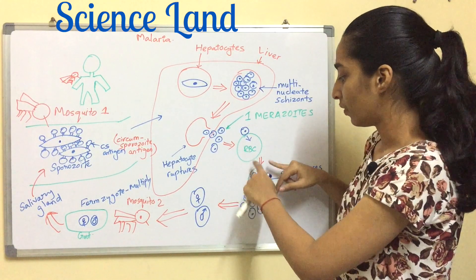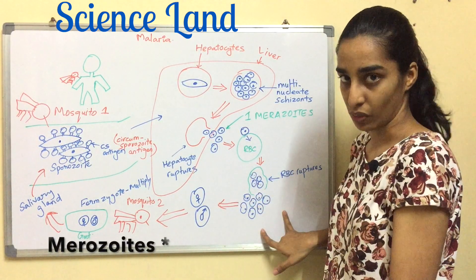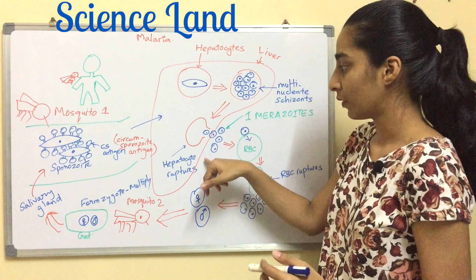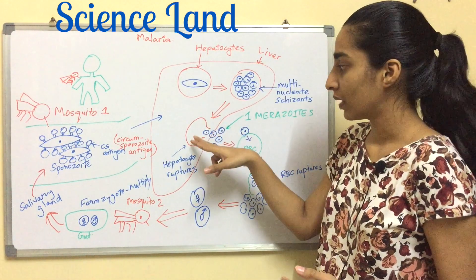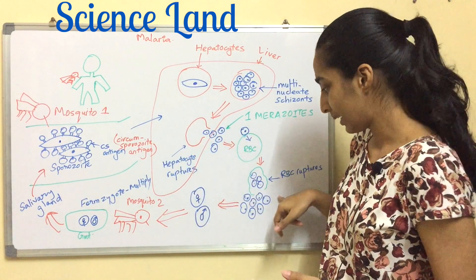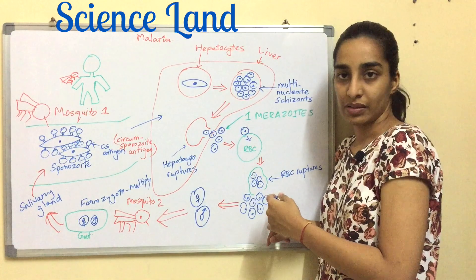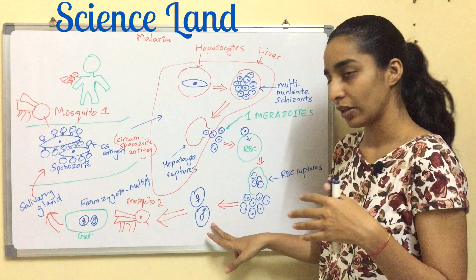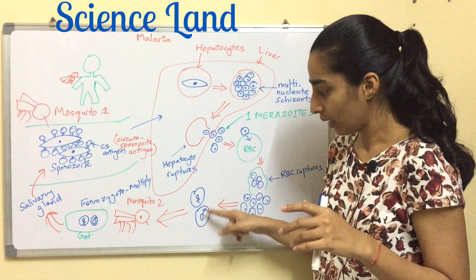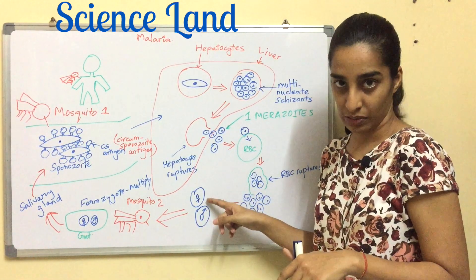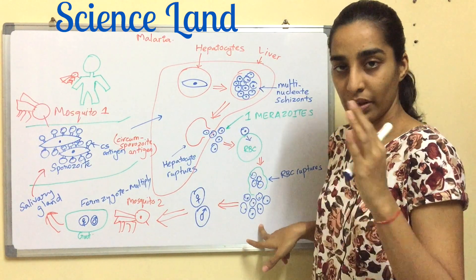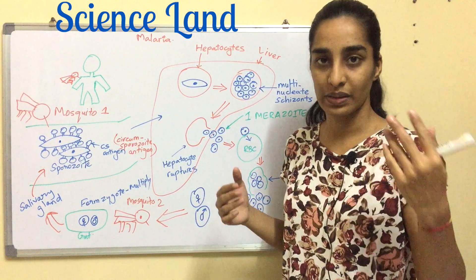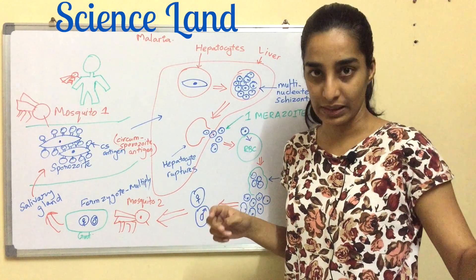The merozoites come out of the liver and flow in the blood, where they infect RBCs, multiply within them, and cause the RBCs to rupture, releasing more merozoites. There are successive stages: the first stage is merozoites released from ruptured hepatocytes, the second is from ruptured RBCs. Some merozoites then differentiate into male and female gametocytes, which flow in the blood.